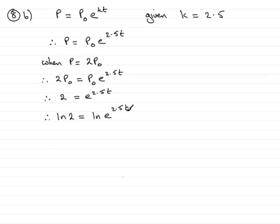And using the power rule for logs, this would be the same as the natural log of 2, and I can bring the 2.5t to the front like that, and I would have it multiplied by the natural log of e. Now the natural log of e is 1, so all I'm going to get is that natural log of 2 equals 2.5t.